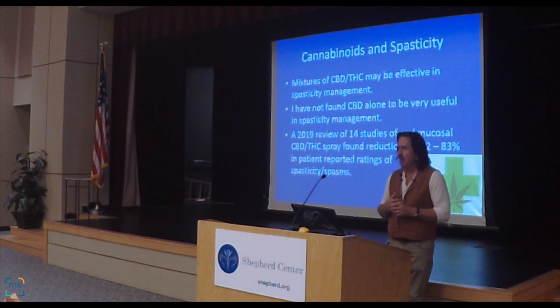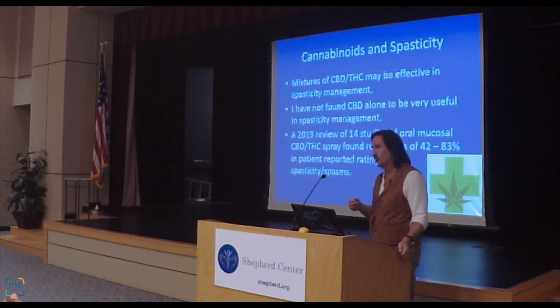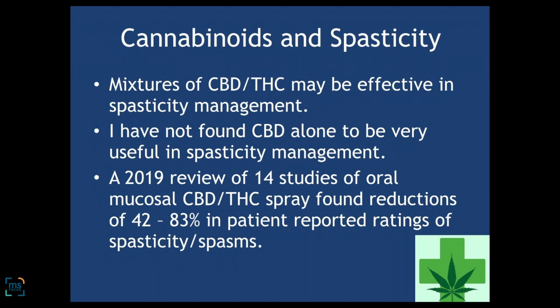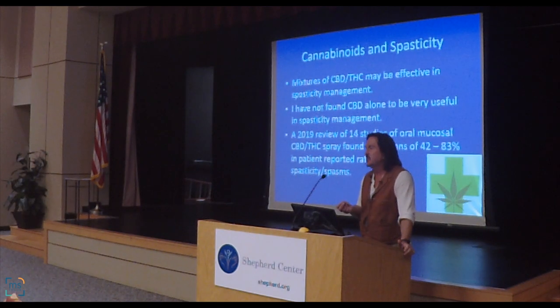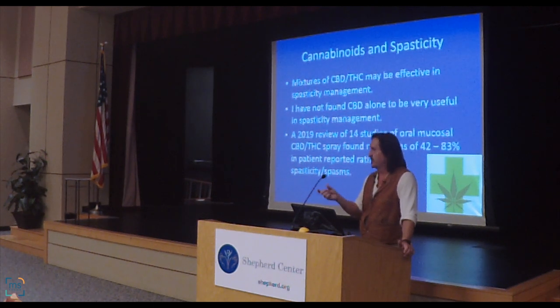Shifting to cannabinoids — we know that mixtures of CBD and THC can be very effective treatments for spasms and spasticity. Hemp-based CBD oil is everywhere — sold at grocery stores, gas stations, vape shops, and online. Hemp doesn't have the gene to make THC and CBD oil without THC is not very helpful in managing spasticity. Where we tend to see pure CBD oil helping is if you just have trouble turning your brain off at night or have some anxiety — it can help with sleep and anxiety, but I've not been impressed with what it does for spasticity and spasms in MS.